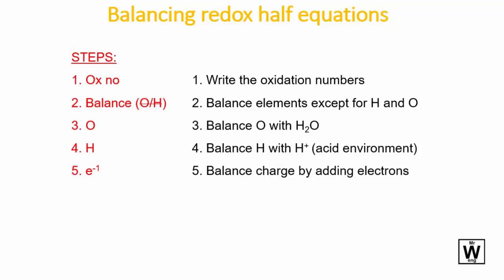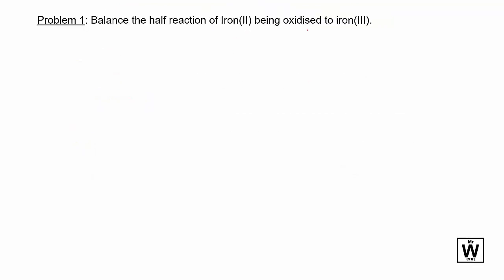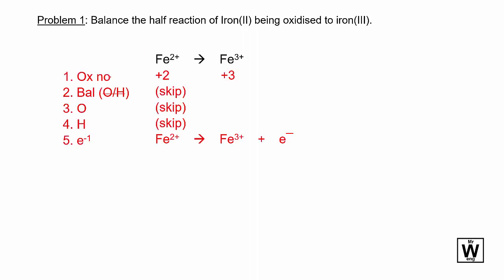So let's have a go at some problems. First of all, the half reaction of iron two being oxidized to iron three. So first of all you write out the equation. These are the various steps one through five. We don't need to do steps three and four because there is no hydrogen or oxygen, and there's one on each side. So the oxidation states here is plus two and plus three. We just need to make sure that this two plus overall charge on this side is equal to a two plus over here. So there'd have to be a three minus one to get a two plus on that side.